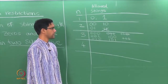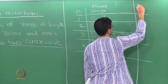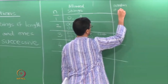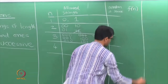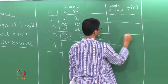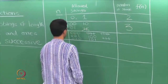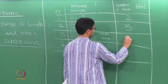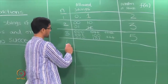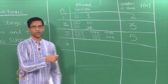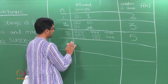Let us count the total number of allowed strings and call this number f of n, since it depends on n. So f of 1 is 2, f of 2 is 3, f of 3 is 5. We have figured out what happens in the initial cases. Now to really understand what is going on, let us try the case n equals 4, though as you can see enumerating these strings gets harder and harder.